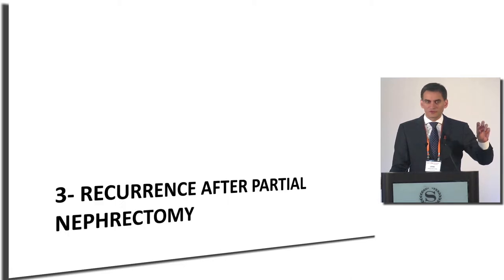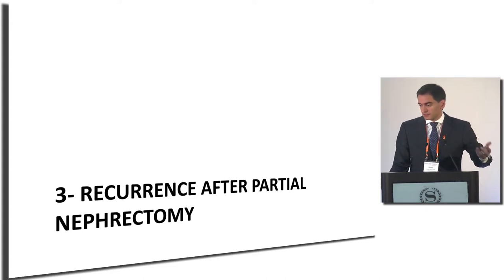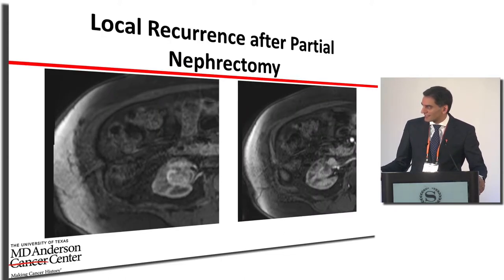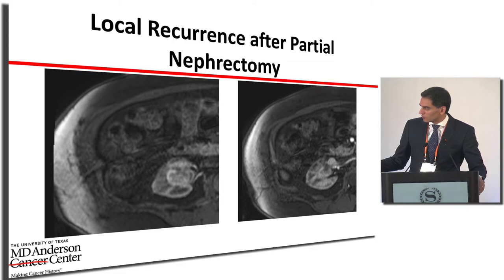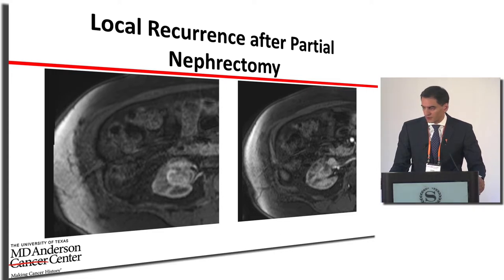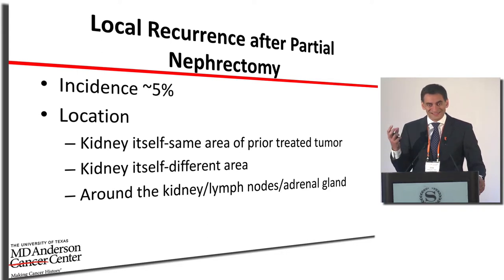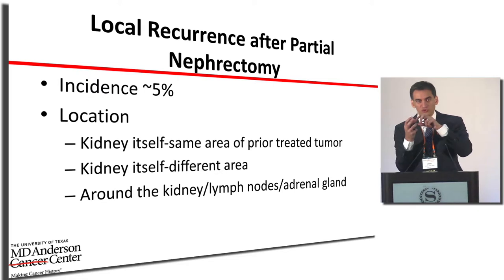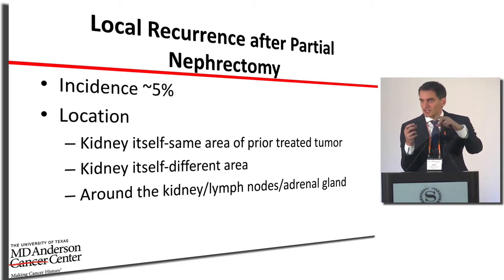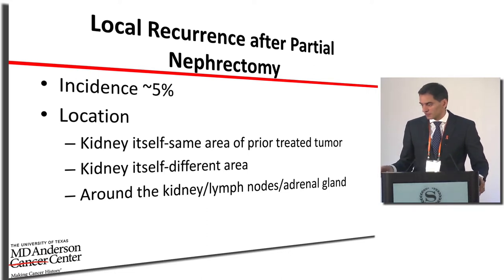Moving to recurrence after partial nephrectomy, where part of the kidney remains: a 79-year-old gentleman had an open partial nephrectomy at another hospital and was found on follow-up to have a recurrent tumor extending into the renal vein. The local recurrence rate after partial nephrectomy, if done appropriately, should be less than 5%. Recurrence can occur in the operated kidney, at the tumor site, at another location in the same kidney, or around the kidney.